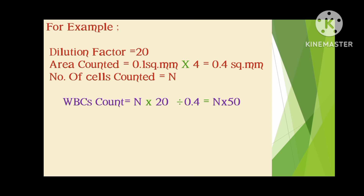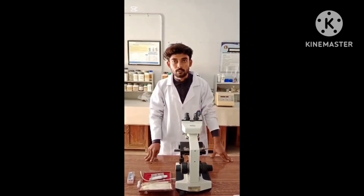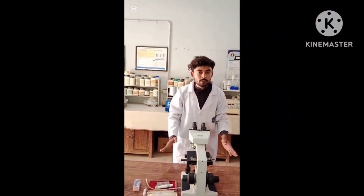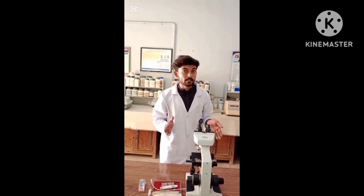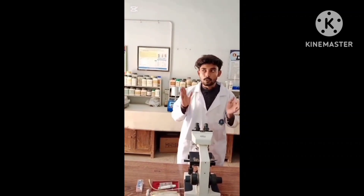The WBC count determination equals N — the number of cells counted — multiplied by the dilution factor, divided by 0.5. The final answer is N multiplied by 50, which gives the total WBC count. Now we will perform the experiment to verify whether it gives the expected value and to demonstrate how the experiment is performed.